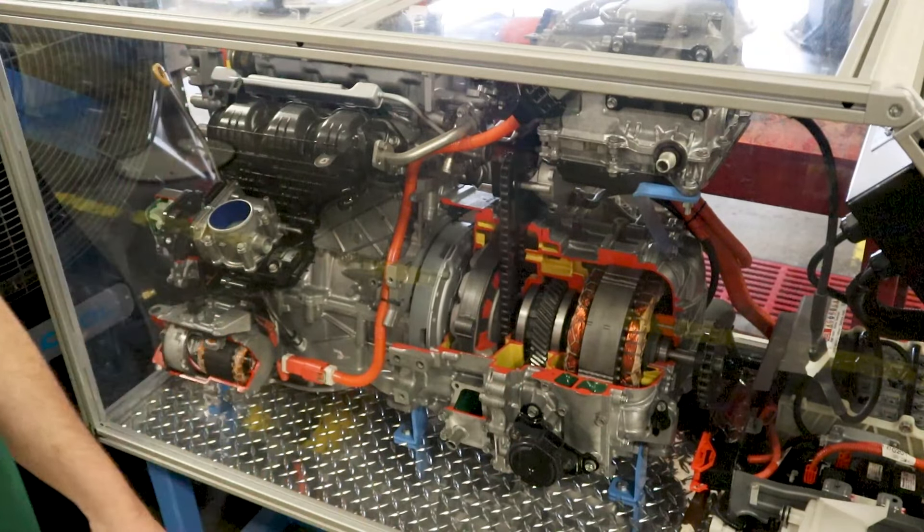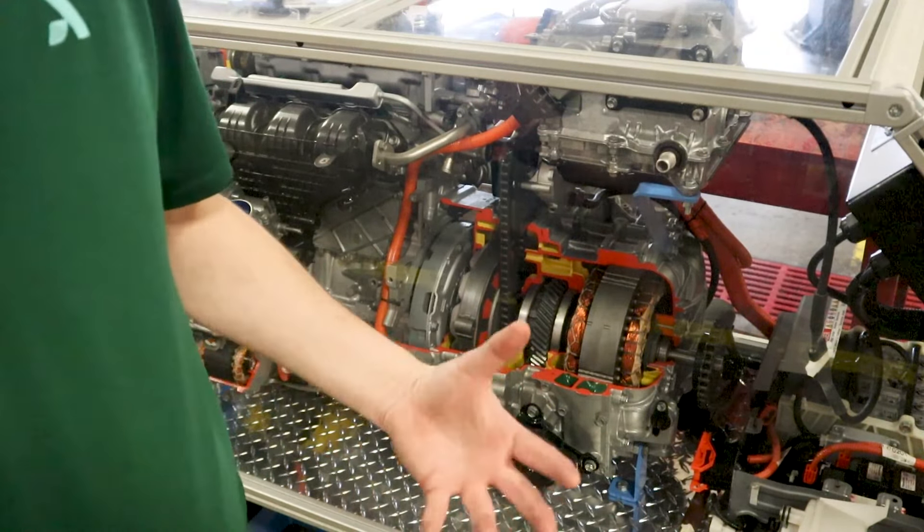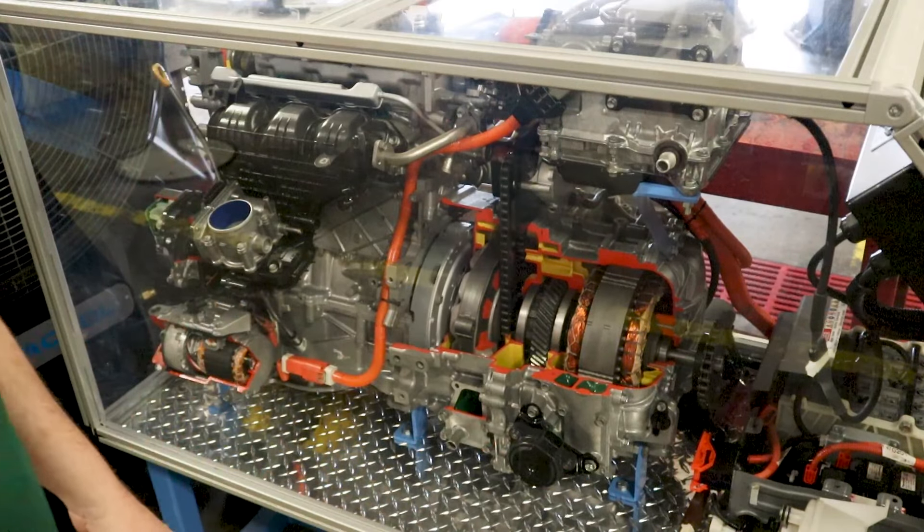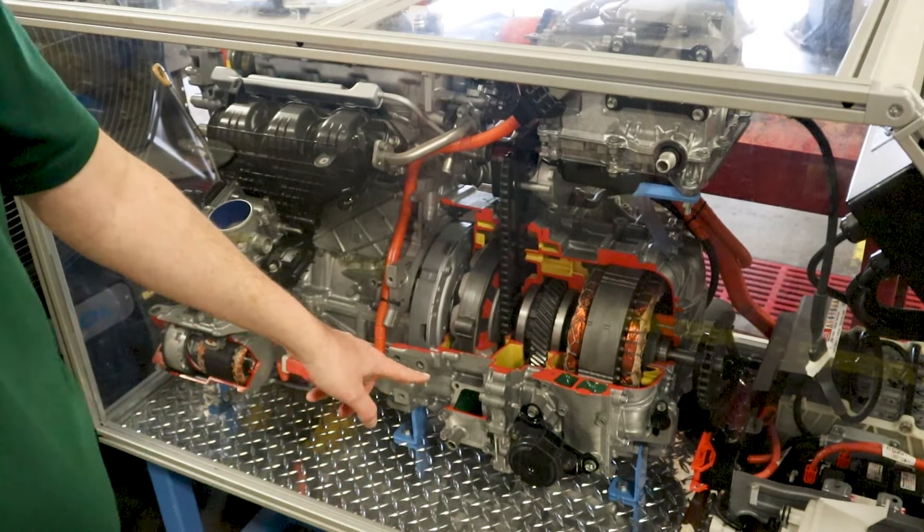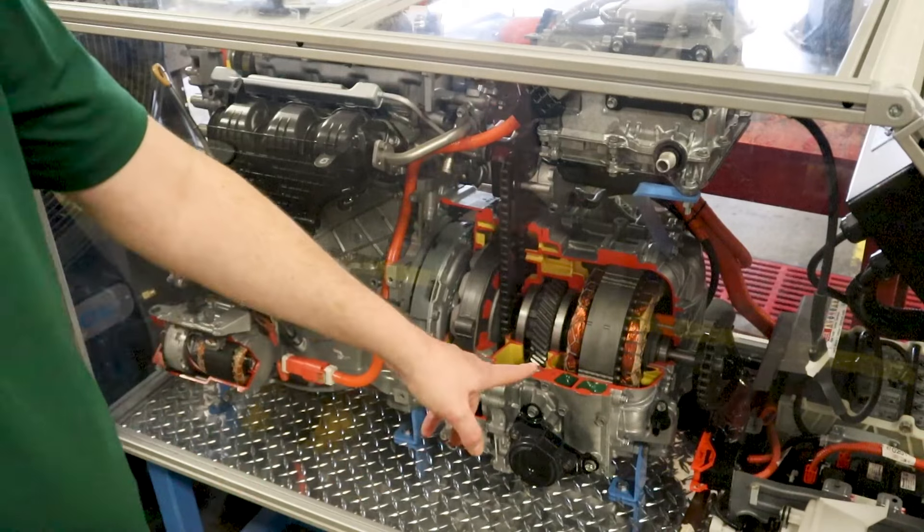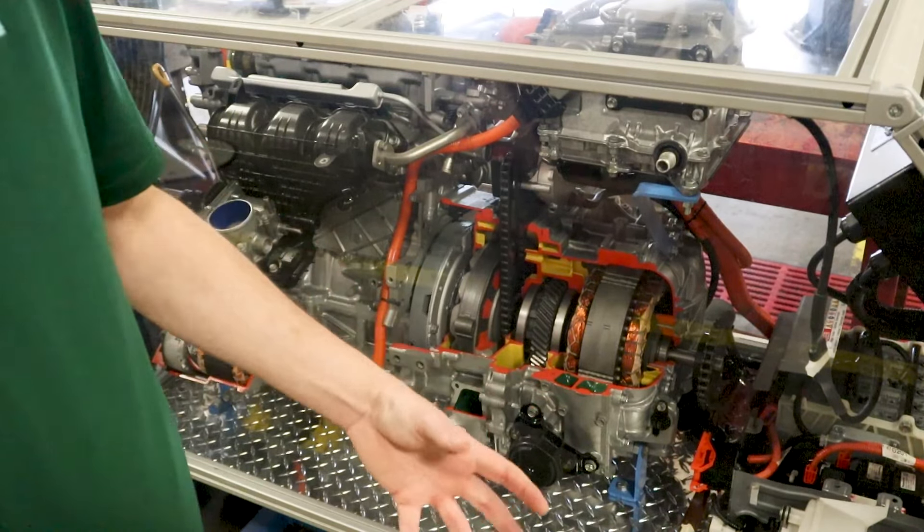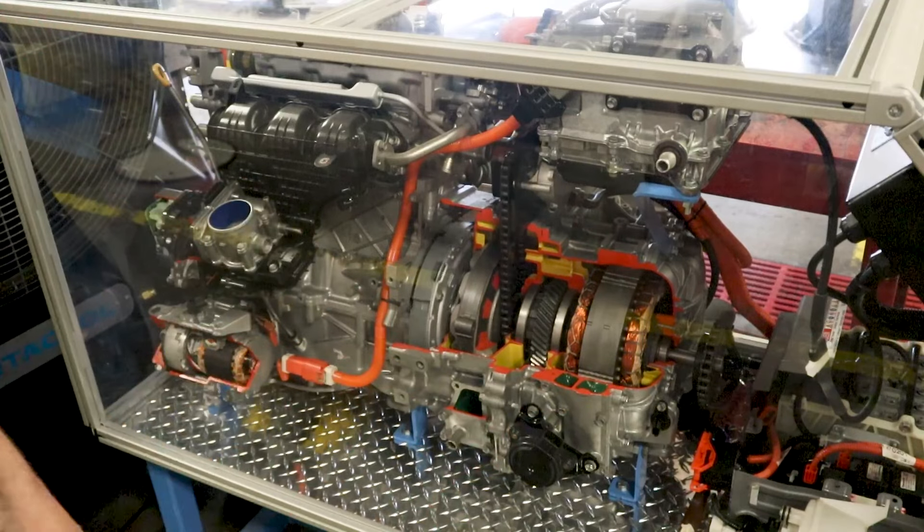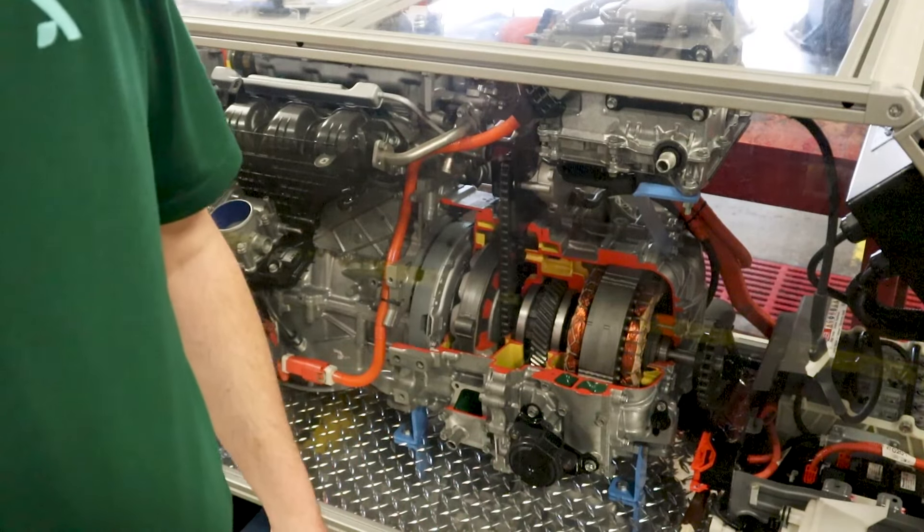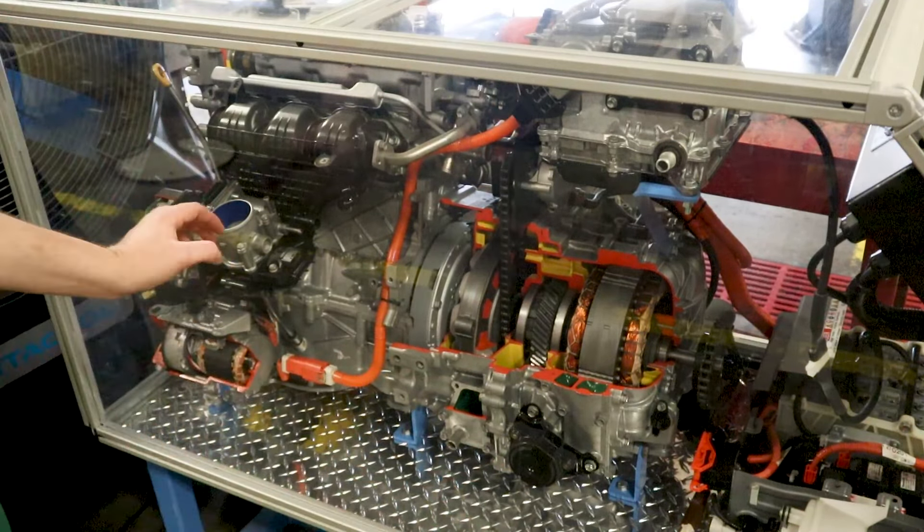So it has a cutaway of the transmission that shows the motor generator 1 and 2 very well. This is your motor generator 1 right here. It's the larger of the two. And it does the brunt of the regenerative braking. And this is your MG2. It does play a role as well. But as you can see, MG2 is just way bigger than MG1 is.